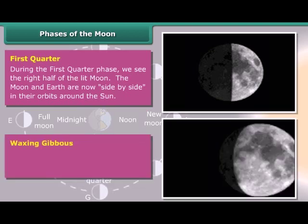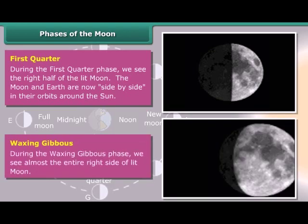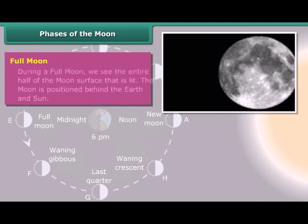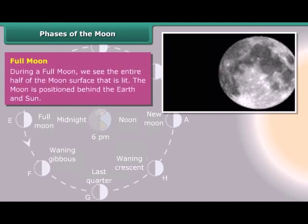Waxing Gibbous: During the waxing gibbous phase, we see almost the entire right side of the lit Moon. Full Moon: During a full moon, we see the entire half of the Moon's surface that is lit. The Moon is positioned behind the Earth and the Sun.